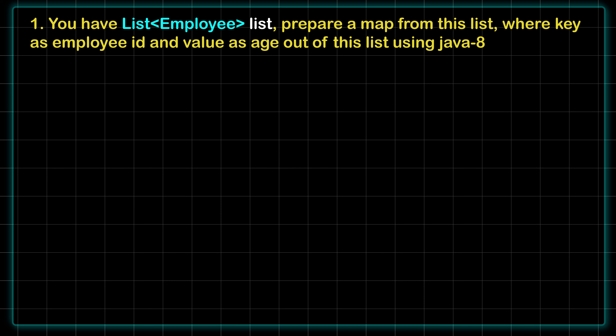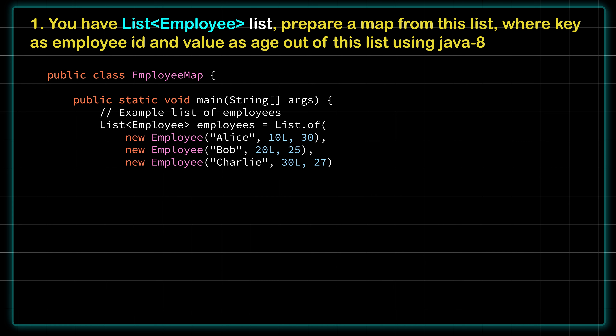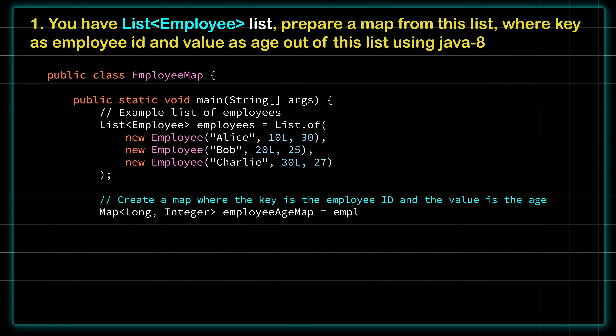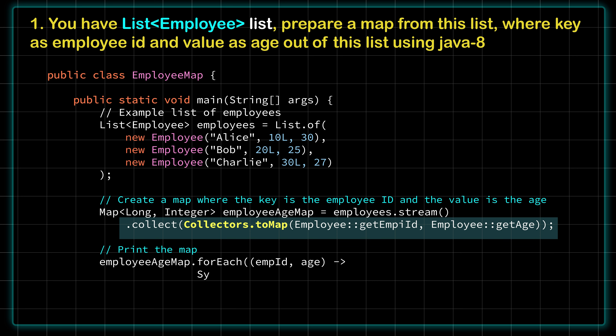I am creating a list with 3 employees — Alice, Bob, and Charlie — with their employee IDs and age. Then, using Java Streams on this list, I am using Collectors.toMap() to extract a map. You can observe that I am passing 2 parameters to the toMap() method: the first one is employee ID, which acts as the key, and then employee age as the value. This is the simple solution that extracts the map as desired from the list.